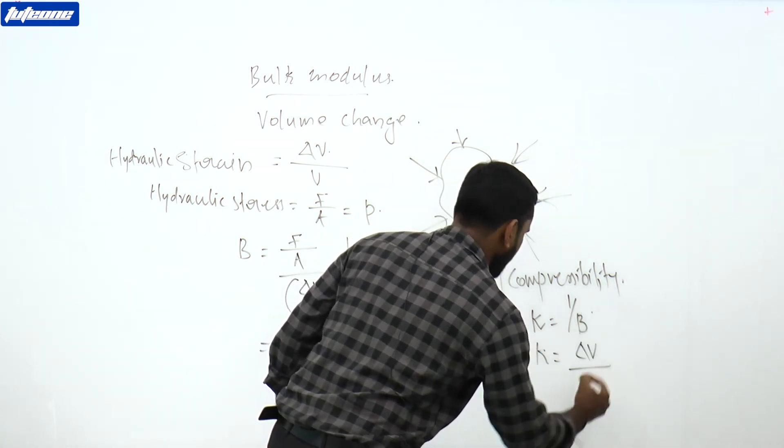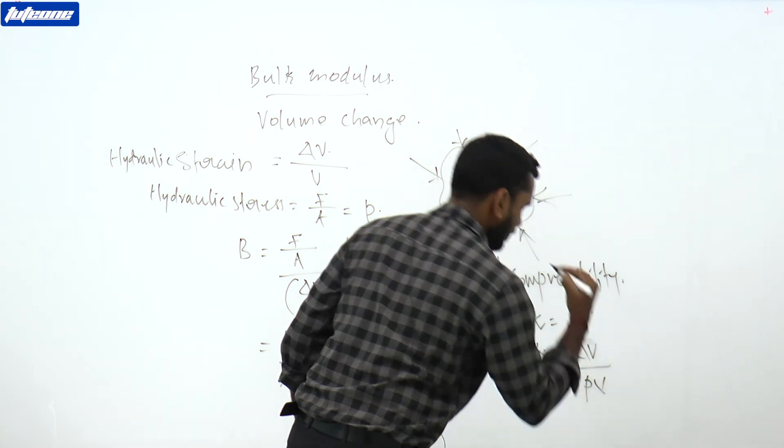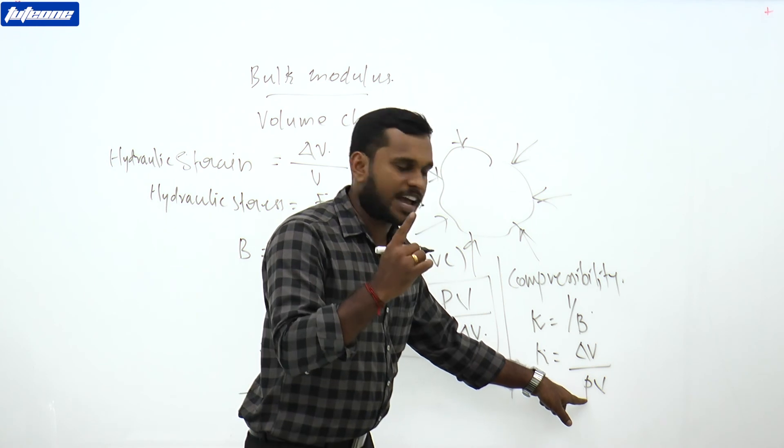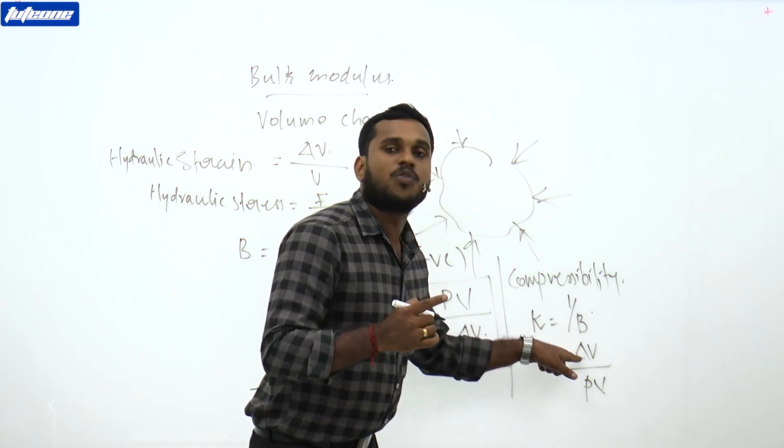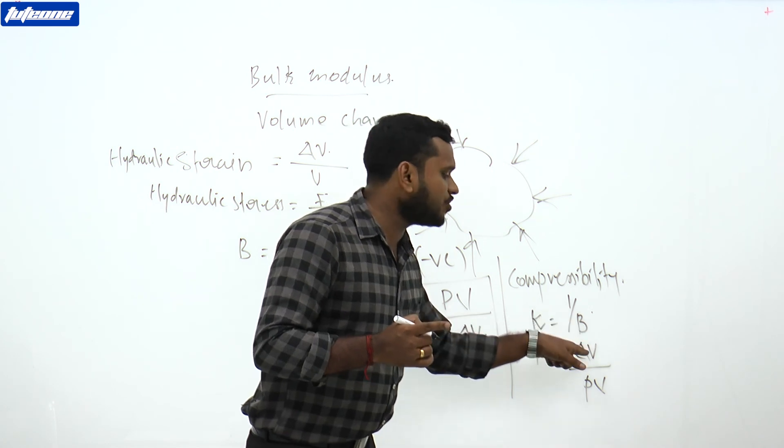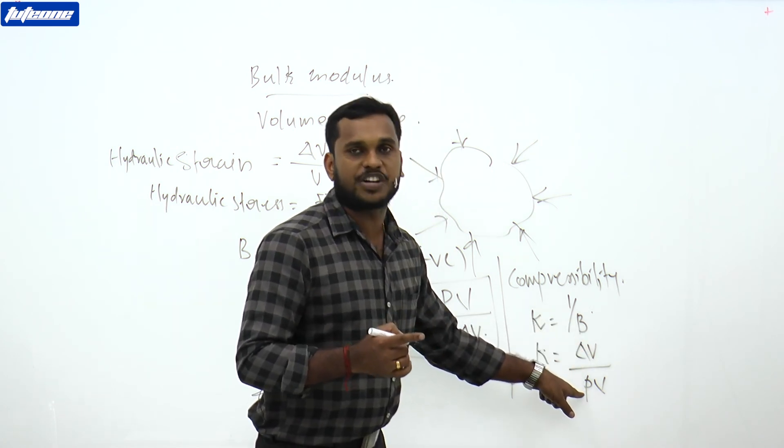If P is equal to 1 atmosphere, that is unit rise in pressure, how much is the volume change? So compressibility is a measure of the change in volume corresponding to unit rise in pressure.